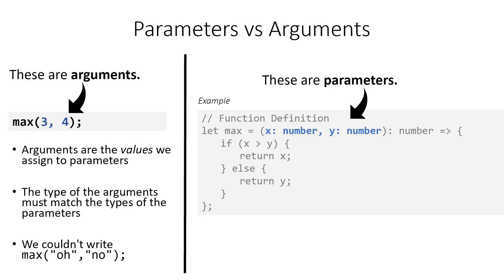So, for example, we couldn't call Max with two strings, like O and no, we would also get an error there.